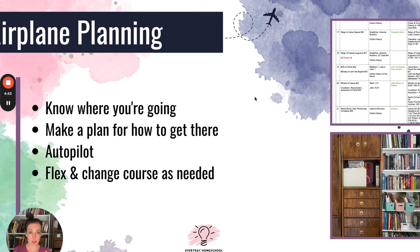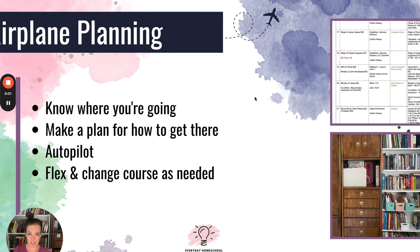I'm going to walk you through your core curriculum plan. If you want more details on setting up plans for all the other subjects — history, science, literature, all the things — you could do the full course. And then we're going to put it on autopilot. Autopilot is a whole session in my full course, but I'll touch on it today, because autopilot is such a gift to your homeschool life.